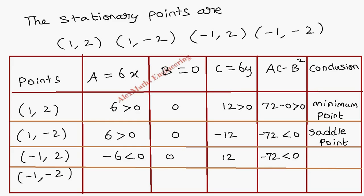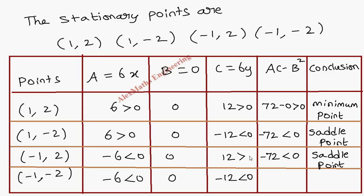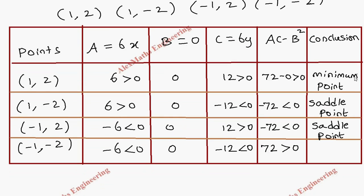For the last point (-1, -2): A = -6, B = 0, C = -12. The product A·C = 72, so AC - B² = 72, which is greater than 0. Since AC - B² > 0 and A < 0, the conclusion is that (-1, -2) is a maximum point.